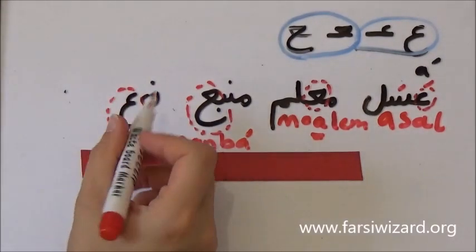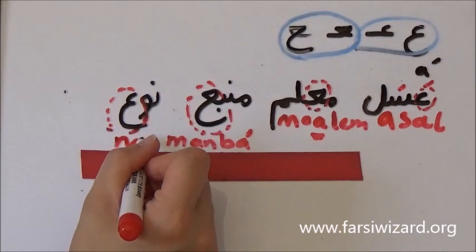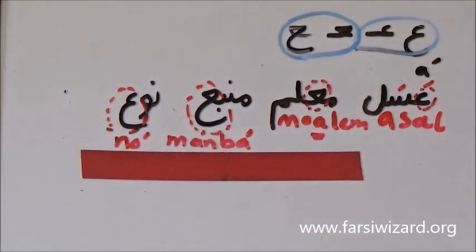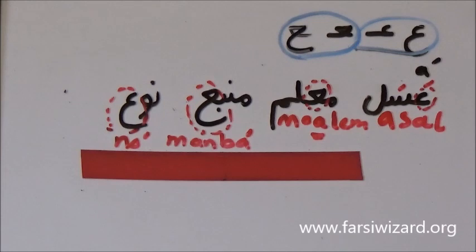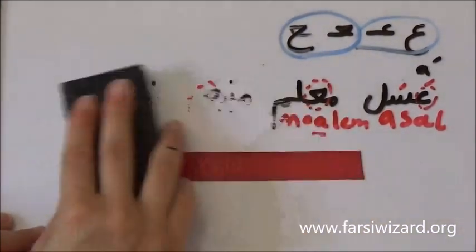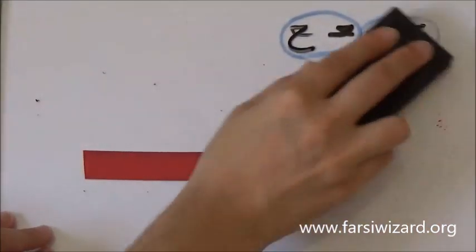For example, the word NO. Here again we have the letter AIN at the end, but because it cannot be connected or joined to the previous letter, it appears in a separate form. NO. So it depends really what's happening in the entire word, and based on that you can make a decision which version of AIN you're supposed to use.